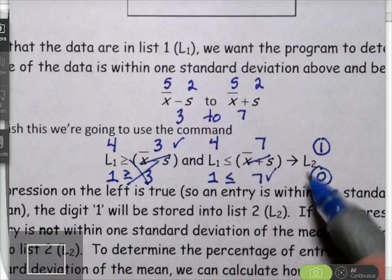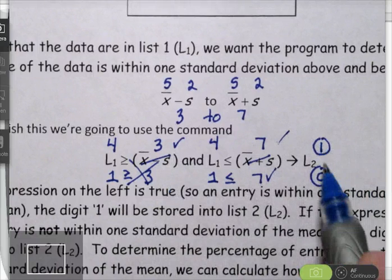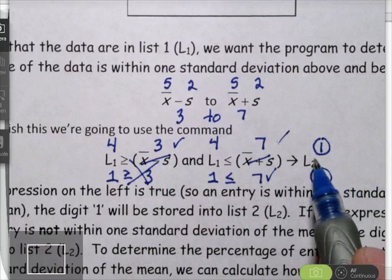So if both of those are true, the number 1 is going to get stored into list 2.